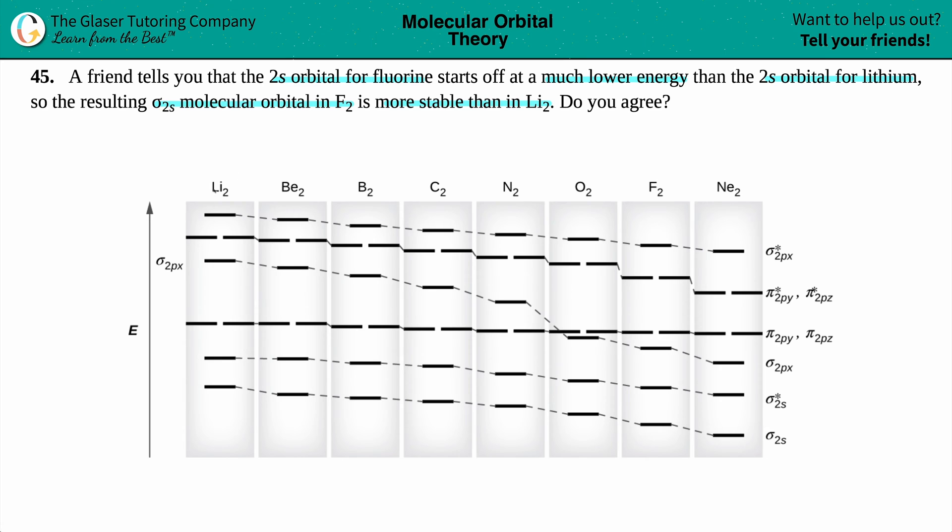But in this case we're looking for Li2, which is over here, and F2. So now, let's see if the ending assumption is correct. They did say that the resulting sigma 2s molecular orbital in F2 is more stable than in Li2.